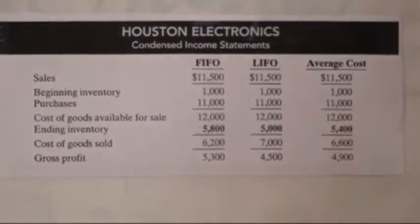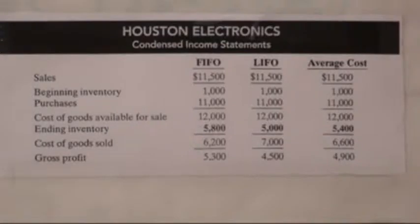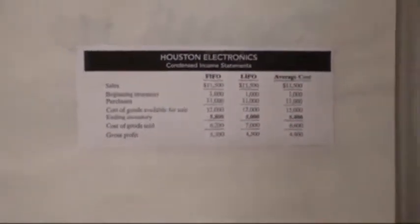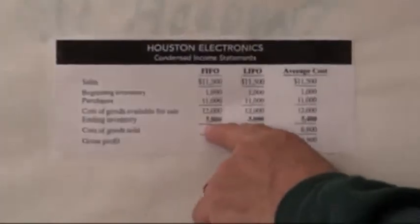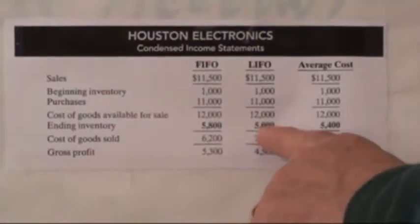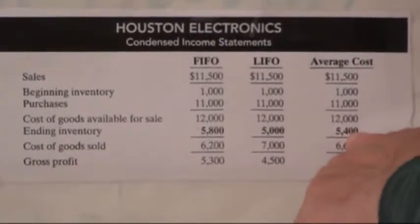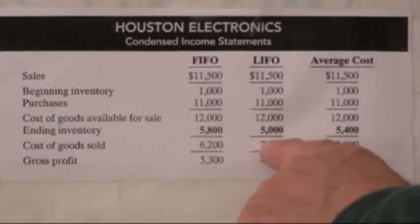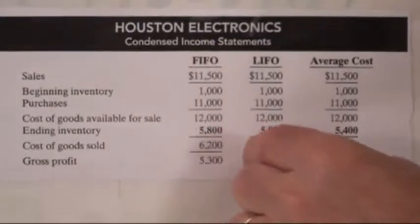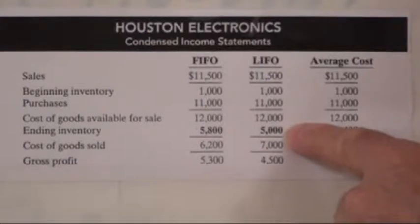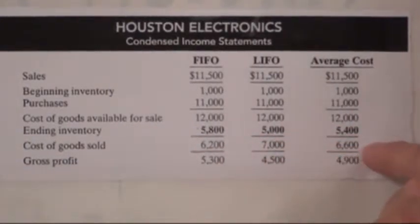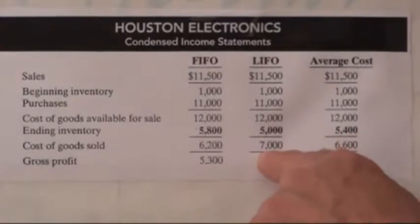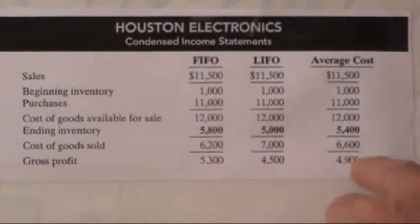We then determine cost of goods sold as we did today for average cost and in previous videos for FIFO and LIFO. The ending inventory figures we calculated are: $5,800 for FIFO, $5,000 for LIFO, and $5,400 for average cost. Remember — the smaller the ending inventory, the greater the cost of goods sold. LIFO produces the largest cost of goods sold, FIFO the smallest, and average cost falls in between.